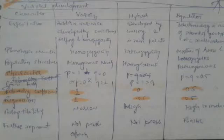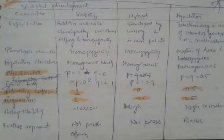Means, agar hum hybrid ke baat karenge, ya self pollinated crop mein koi line develop kiye hain, ya population develop kiye hain, toh jab bhi wo varietal development committee ke through jaata hai, toh usko hum variety bolte hain. Lekin agar particularly hum differentiate karein, toh variety specifically hum self pollinated crops mein baat karte hain. Iska exploitation kaise karte hain — here additive variance is developed by continuous selfing and homozygosity.